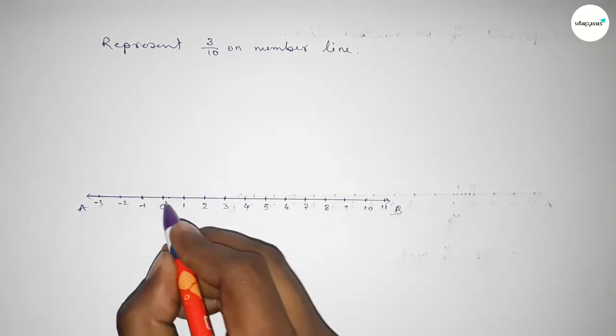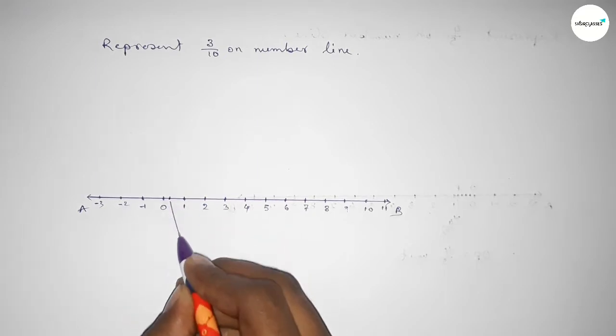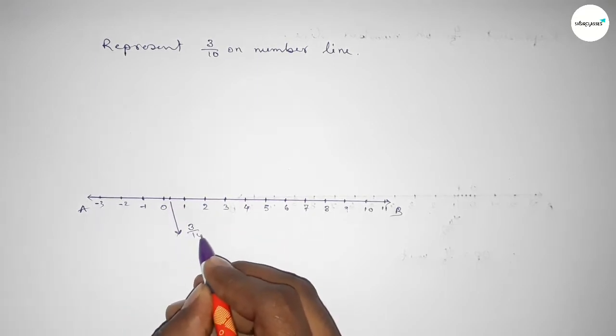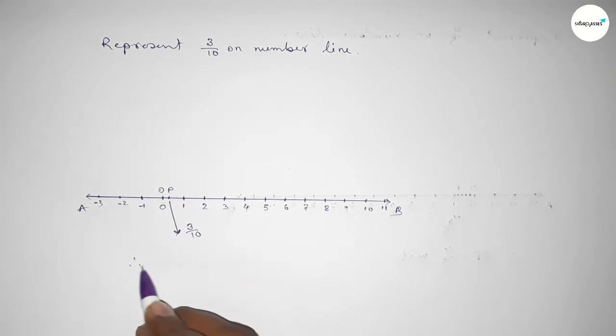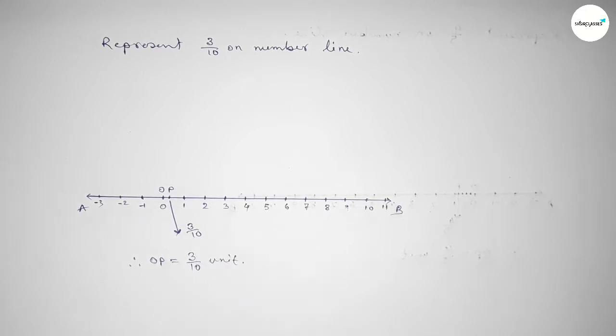So this is 0.3 or 3/10 on the number line. Taking points O and P, therefore OP equals 3/10 unit. That's all, thanks for watching.